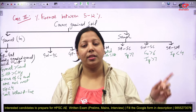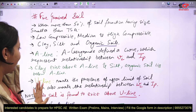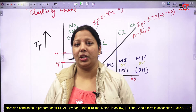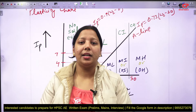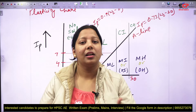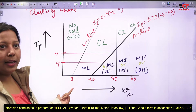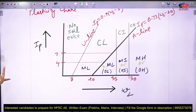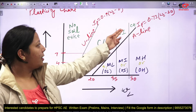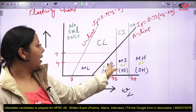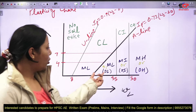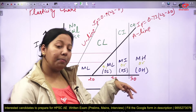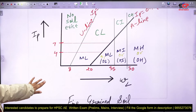For fine-grained soil classification under the Indian Standard system, we classify on the basis of low, medium, and intermediate compressibility. The symbols are: CL (low compressibility clay), CI (intermediate compressibility clay), CH (high compressibility clay), ML, MI, MH for inorganic silts, and OL, OI, OH for organic silts with low, intermediate, and high compressibility respectively.